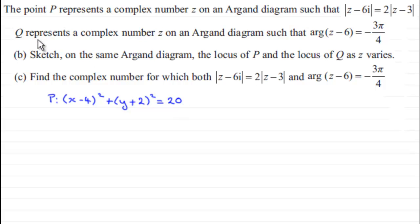Now we're told that Q represents a complex number z on an Argand diagram, such that the arg of z minus 6 equals minus 3π over 4. We're asked to sketch, on the same Argand diagram, the locus of P and the locus of Q as z varies, and then find the complex number for which both these equations are true. If you'd like to give this a go and haven't done so already, just give you a moment to pause the video. Do come back when ready, and as usual, you can check your work solution with mine, or fast forward to the end just to see all the workings and get to the answer very quickly.